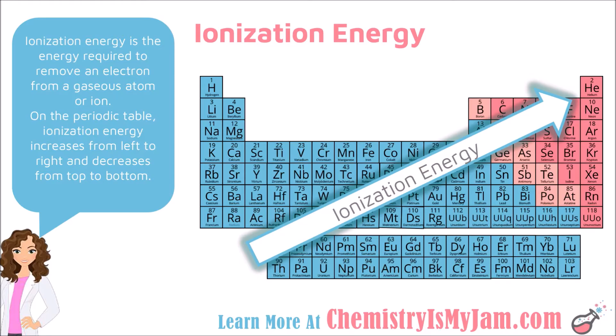On the periodic table, ionization energy typically increases from left to right and increases from bottom to top. The overall trend can be represented with an arrow going from the bottom left to the top right. Helium has the highest ionization energy on the chart, which makes sense because helium is a very small atom. Its electrons are very close to the nucleus and are very attracted to that positive charge, making them difficult to remove.